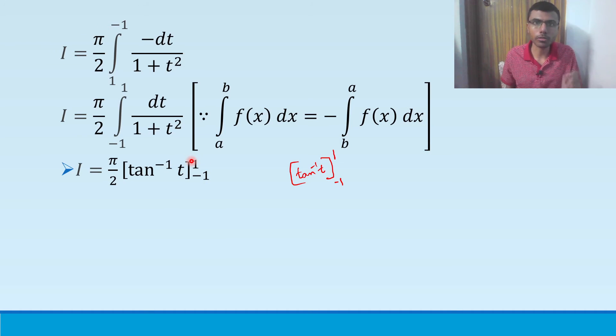The next step, what you should do is upper limit first you should substitute. Upper limit is 1. So tan inverse of, in place of t you should put first 1. Next in place of t, you should put minus 1. So first tan inverse of 1, minus there will be a minus between the substitution, minus of tan inverse, the lower limit, tan inverse minus 1. Tan inverse of 1 minus tan inverse of minus 1.